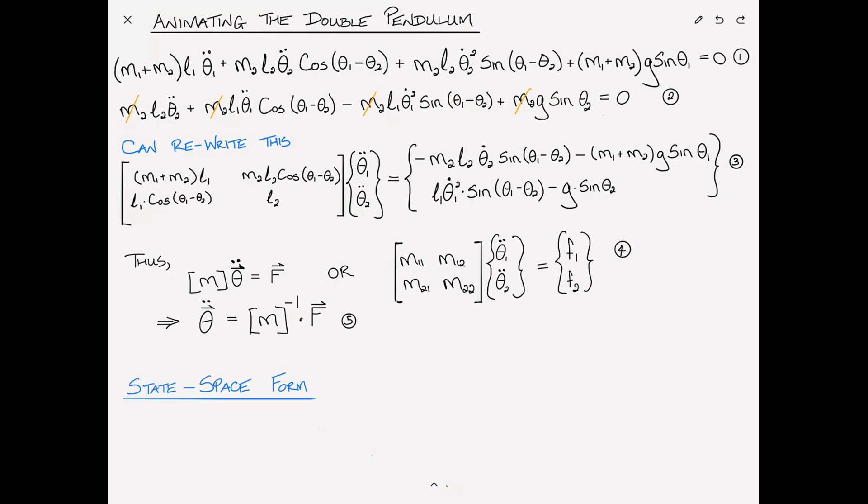As a reminder, in order to convert to state-space form, we pick a new variable, let's say y, where we stack the velocity and position vectors one above the other. So y is just a 2n by 1 vector that stacks the velocities and the position, or the angle in this case. Call that number 6.